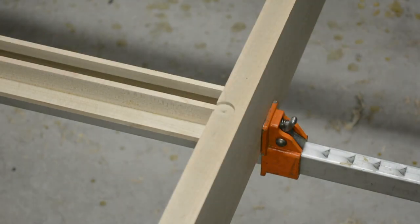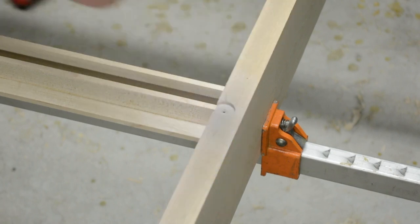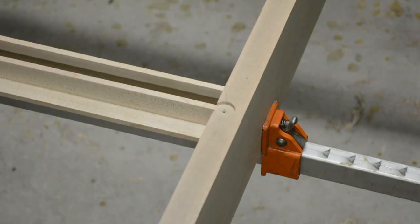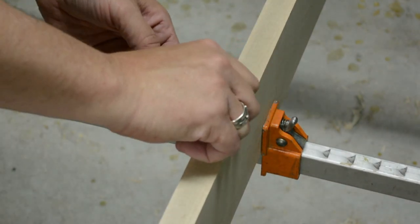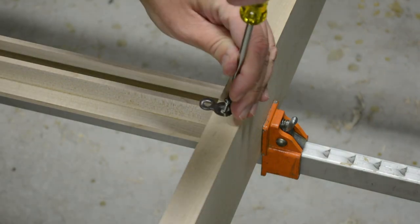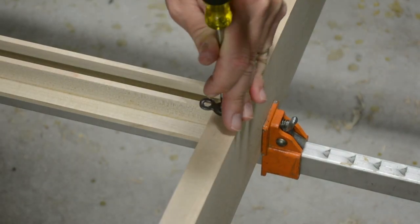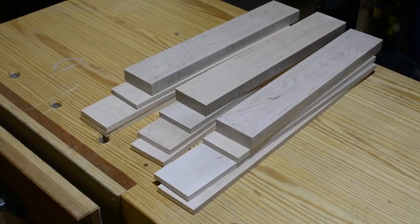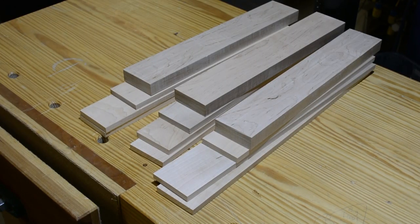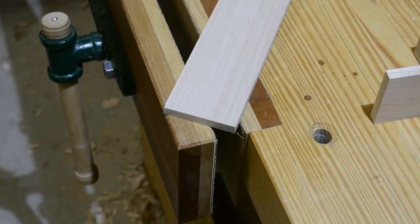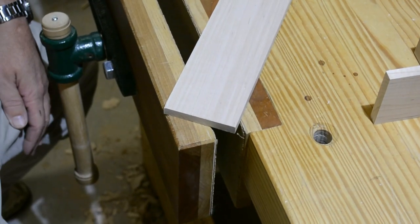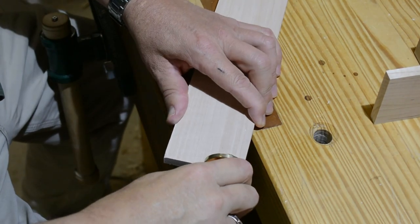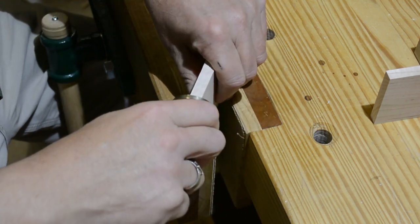While I'm waiting on the top to dry, I can go ahead and put the figure eight bolts in. I cleaned up the stock that I re-sawed into drawer sides and back and now I'm going to go ahead and lay out and cut the joinery for the drawers.